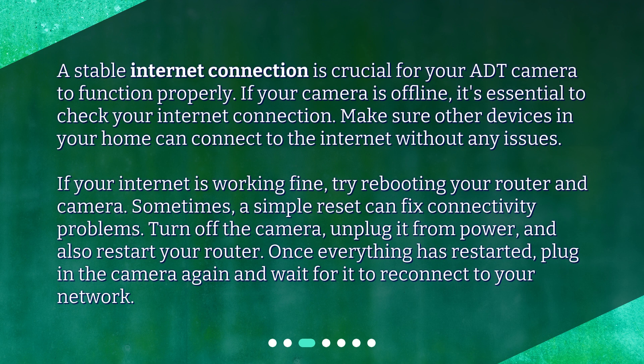Internet Connection. A stable internet connection is crucial for your ADT camera to function properly. If your camera is offline, it's essential to check your internet connection. Make sure other devices in your home can connect to the internet without any issues. If your internet is working fine, try rebooting your router and camera. Sometimes a simple reset can fix connectivity problems. Turn off the camera, unplug it from power, and also restart your router. Once everything has restarted, plug in the camera again and wait for it to reconnect to your network.